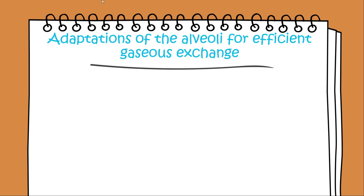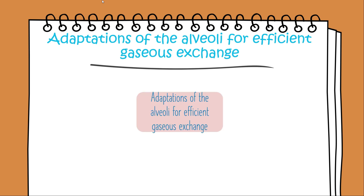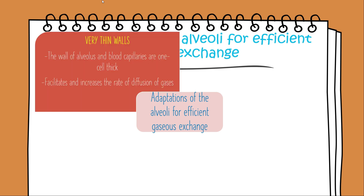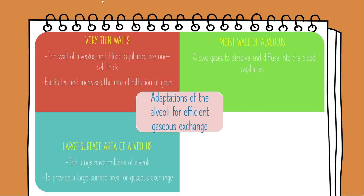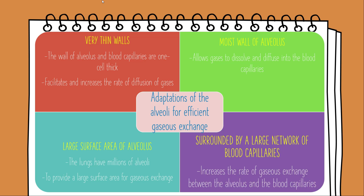The adaptations of the alveolar structure increase the efficiency and maximize the exchange of gases in the human body. Among the adaptations of the alveolar structure are very thin walls, moist wall of alveolus, large surface area of alveolus, and surrounded by a large network of blood capillaries. The alveolus and blood capillaries have thin walls which are made up of only one layer of cells. This structure facilitates and increases the rate of diffusion of gases across the walls of the alveolus and blood capillaries.